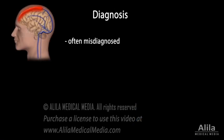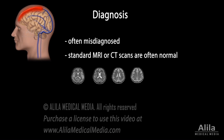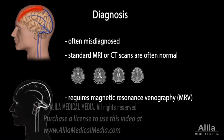CVST is often misdiagnosed due to its rarity, wide spectrum of symptoms, and the fact that symptoms can appear suddenly or gradually. The standard MRI or CT scans used to detect stroke are often normal in CVST. To diagnose CVST, the veins must be specifically examined in a procedure called magnetic resonance venography. CVST must be suspected in patients of any age who have severe headache that doesn't go away and any risk factors for clotting disorders.